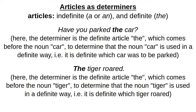For example, 'have you parked the car?' Here the determiner is the definite article 'the,' and it comes before the noun 'car.' It determines that the noun 'car' is used in a definite way — we know, we are certain, we are specific about which car. Another example: 'the tiger roared.' Here also we are sure about which tiger. If we are not sure, we would say 'a tiger.' But since we are definite, we say 'the tiger.'